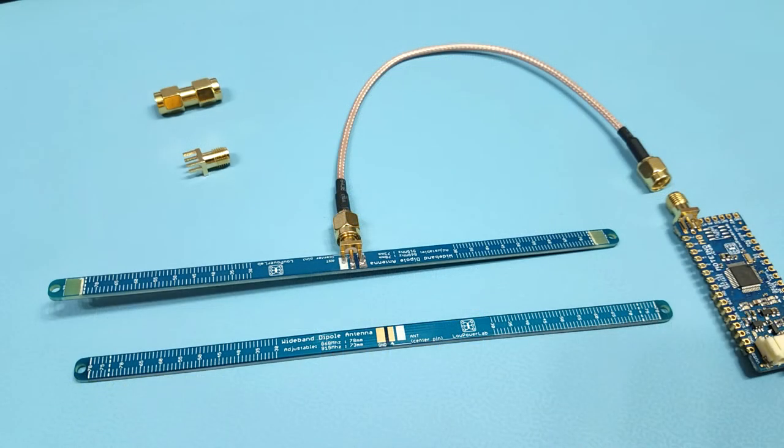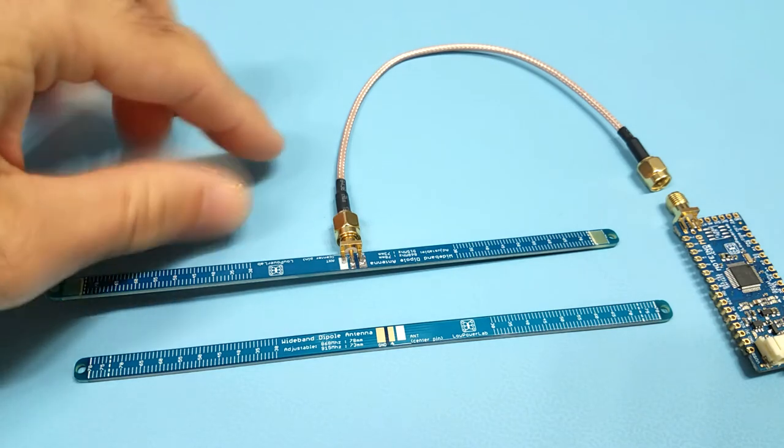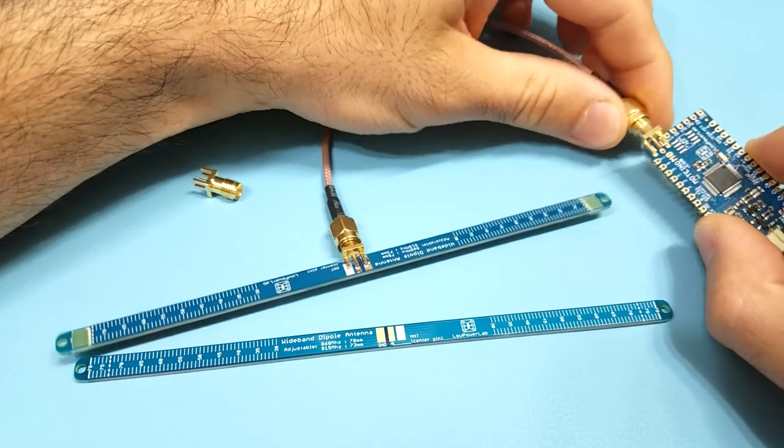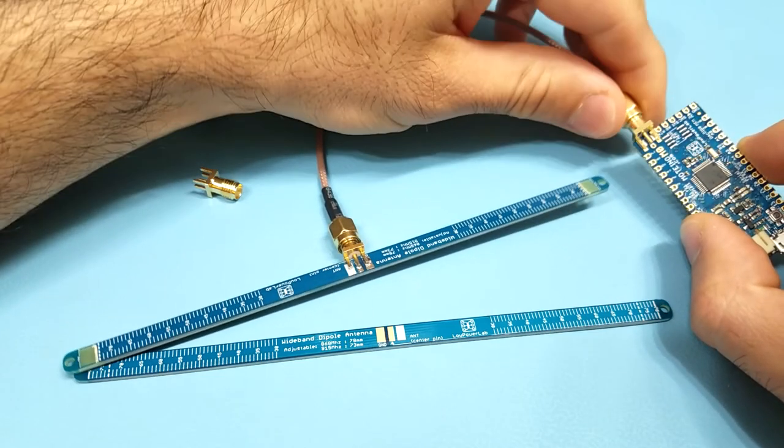There are some available accessories including SMA connectors and RF coax cable which makes it convenient to connect this to any Moteino board or any other development board that has SMA pads.